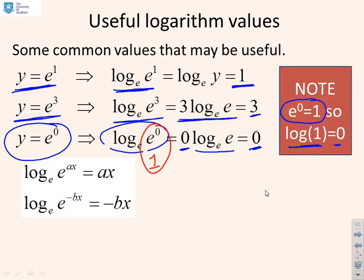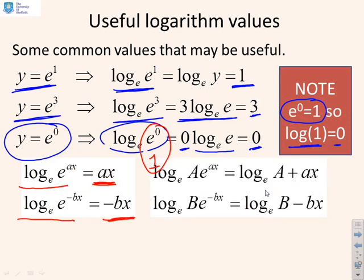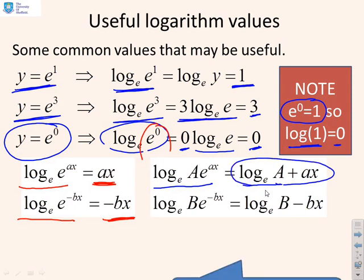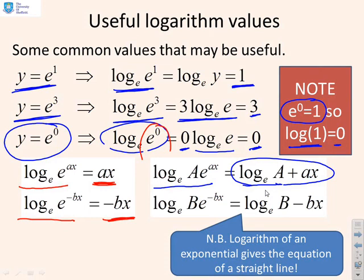Other useful values: log_e of e to the ax gives you ax, and log_e of e to the minus bx gives you minus bx. A more useful one, however, is this: if you do log_e of A times e to the ax, then because there's a product in there, you get log_e of A plus log_e of e to the ax, which is just ax. So you end up with log_e A plus ax — and what you'll see is that the logarithm of an exponential gives the equation of a straight line. That's going to be very, very useful.